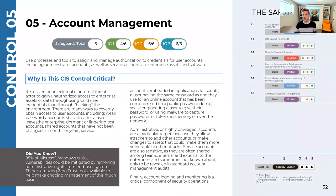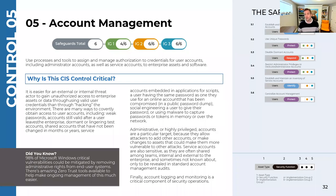Looking at the six safeguards: 5.1 is to establish and maintain an inventory of accounts. The blue identify box tells us this is a proactive activity on the NIST framework. It has three dots — green, orange, and blue — because this is in all three implementation groups. An inventory of accounts means making sure we know who should have access to our systems, using unique passwords.